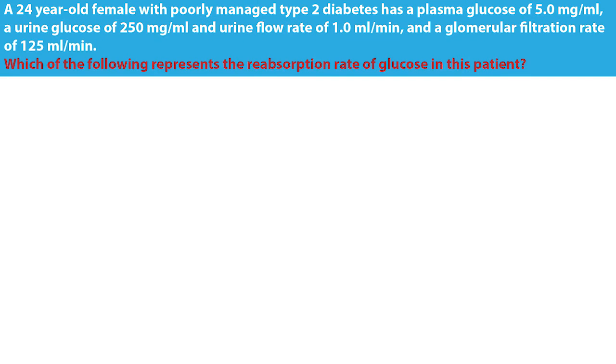With this in mind, let's answer the following question. A 24-year-old female with poorly managed type 2 diabetes has a plasma glucose concentration of 5 milligrams per ml, a urine glucose concentration of 250 milligrams per milliliter, a urine flow rate of 1 milliliter per minute, and a glomerular filtration rate of 125 milliliters per minute. Which of the following represents the reabsorption rate of glucose in this patient?